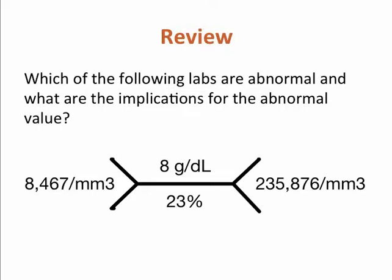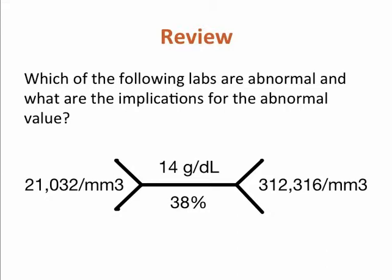Let's review. Which of the following labs are abnormal and what are the implications for the abnormal value? You may want to pause the lecture to think about your answer. In this case, the hemoglobin and hematocrit are decreased, which suggests that there is an underlying anemia. This would then warrant further investigation into the other red blood cell related labs. Your fishbones represent a starting point for further analysis. In this next case, the white blood cells are elevated, suggesting an underlying infection or inflammation, which would warrant further investigation into the white blood cell subtypes.